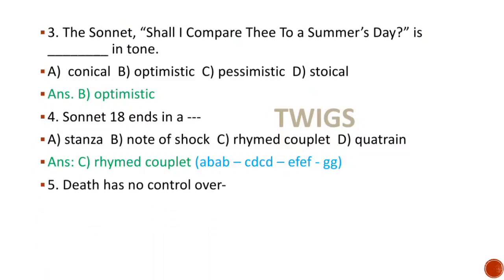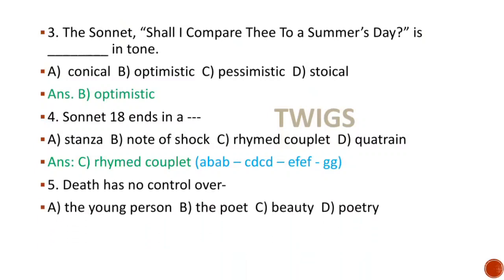Next MCQ: Death has no control over — options are the young person, the poet, beauty, poetry. We know that death has no control over beauty. Hence the right answer is option C.